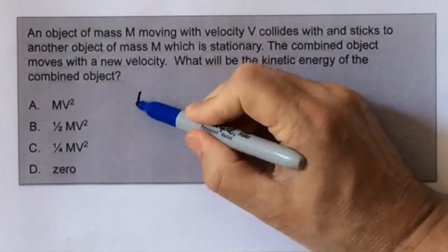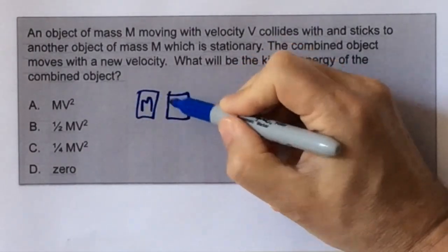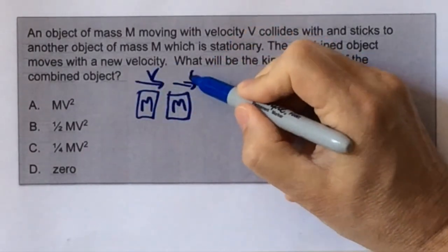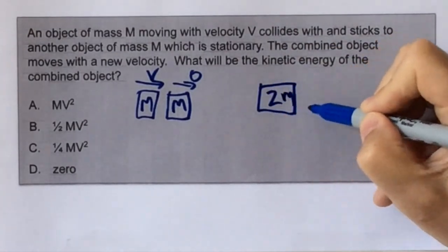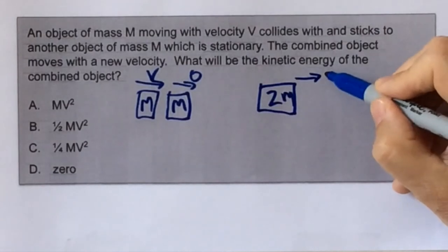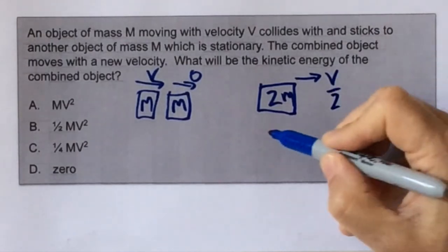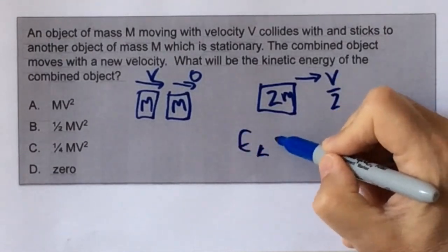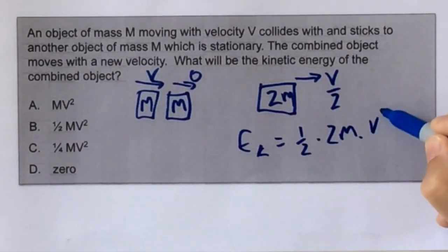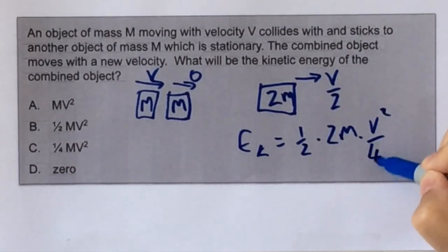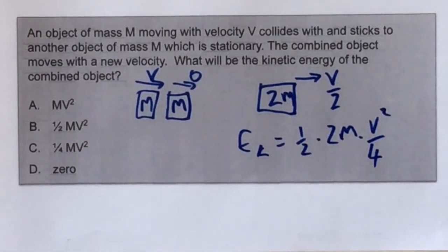There are two bodies with mass m. One has a velocity v, the other one has velocity zero. They combine to make a body of mass 2m, and its velocity is v divided by 2 by conservation of momentum. The kinetic energy formula is half times 2m — the combined mass — times v squared over 4, which is the squared velocity of the combined object. When the twos cancel, we get a quarter mv squared, and so the answer is C.